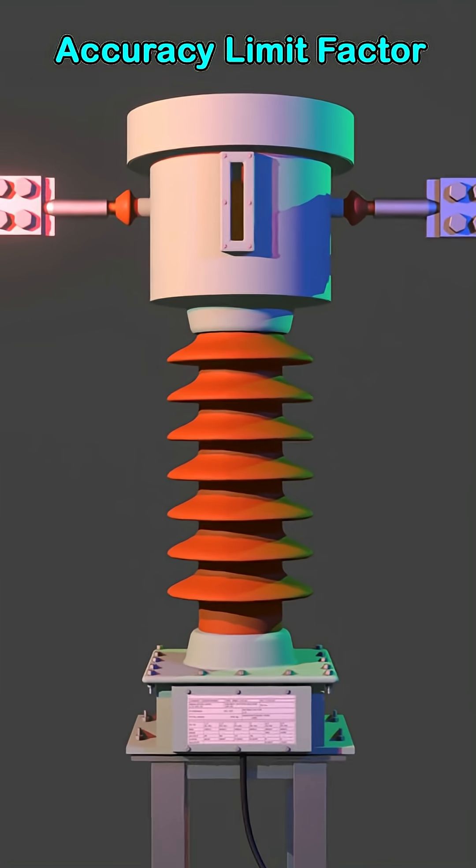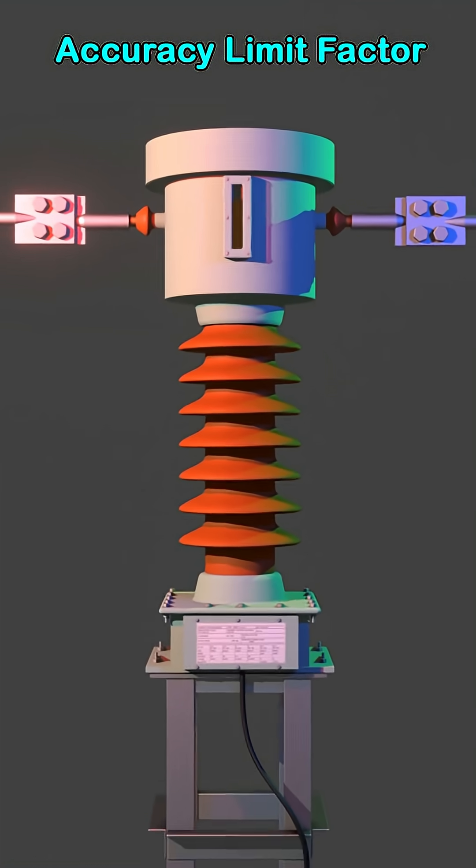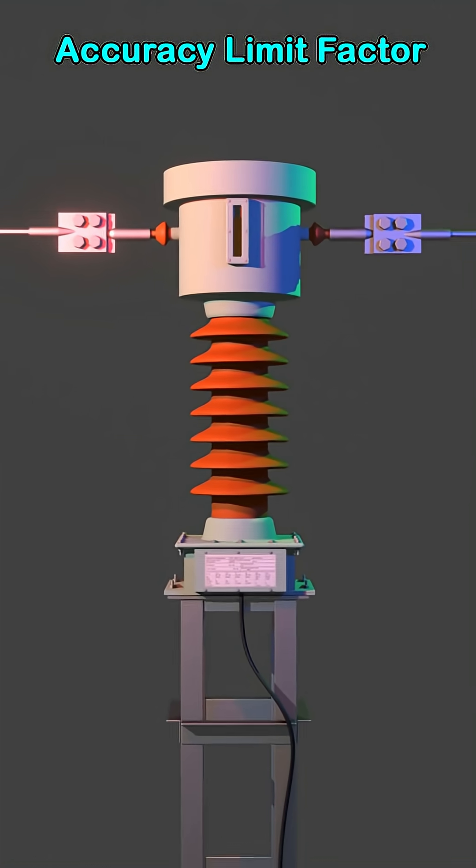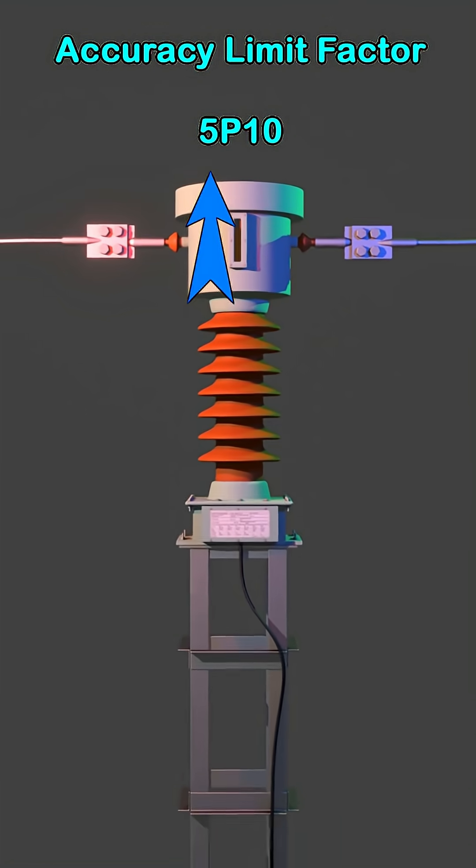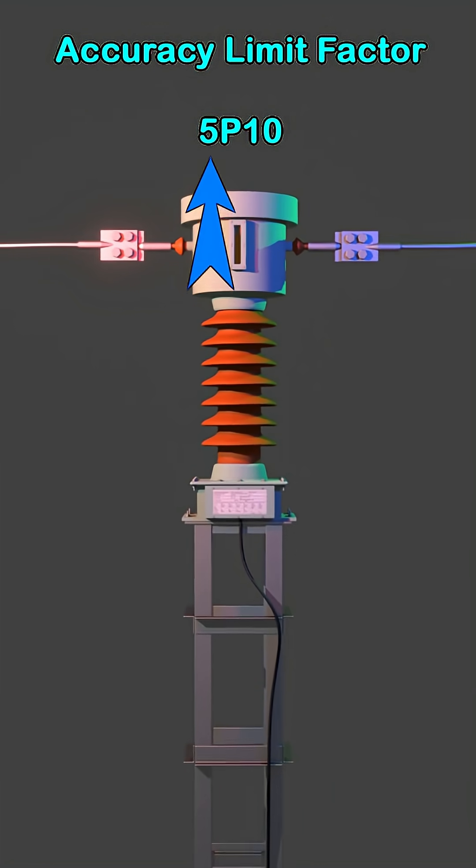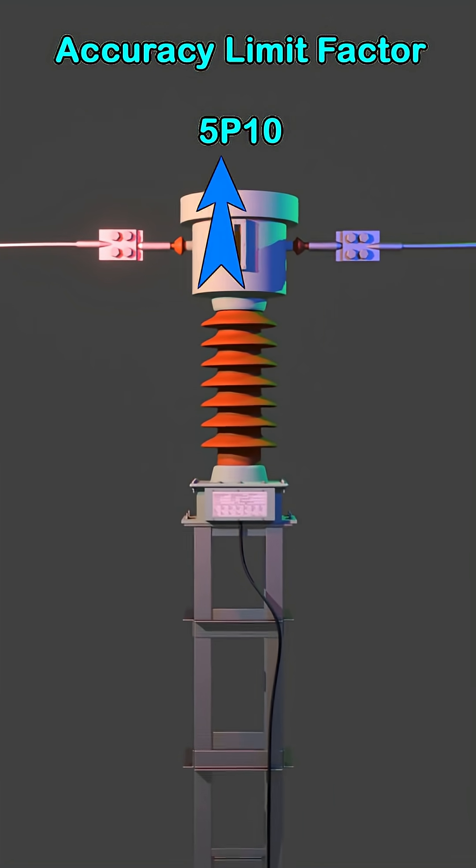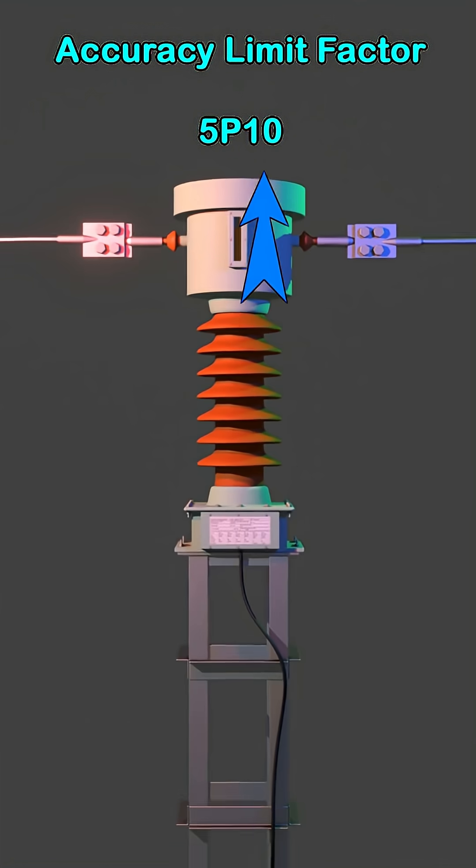To define the accuracy of the protection core of any current transformer, we find notations like 5P10 here. 5 means the percentage of error allowed for the protection core of the CT and 10 is the value of ALF.